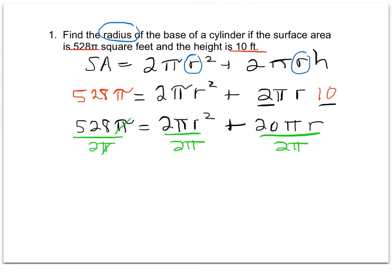The π's are going to cancel in each of these terms. And then I'm going to clean up the rest of it. 528 divided by 2 is 264. 2 divided by 2 cancels out, and all I'm left with in this term is r². And then 20 divided by 2 is 10, and I have the r there as well, 10r.